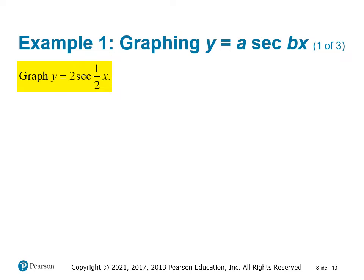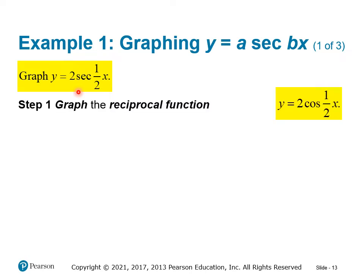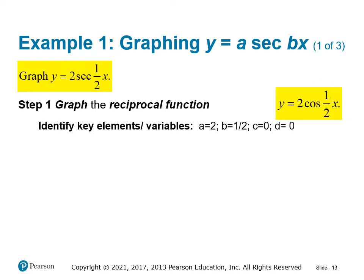Let's look at an example: graphing 2 secant(½x). To do this, we first graph the reciprocal function — the reciprocal of secant is cosine. So we replace secant with cosine and graph that first. We identify the key elements: the amplitude, the period adjuster B, any vertical shift C, and any phase shift or horizontal shift D.